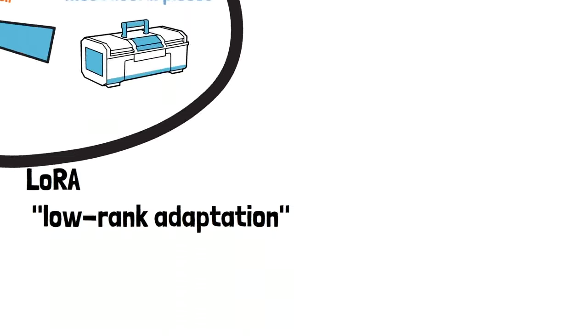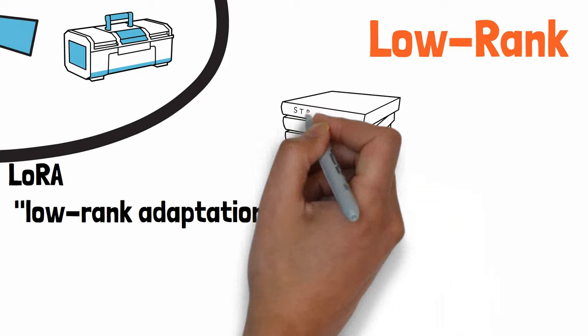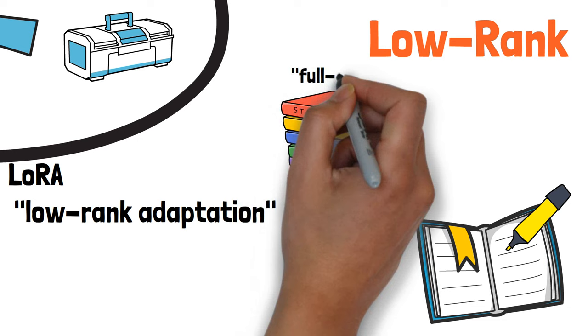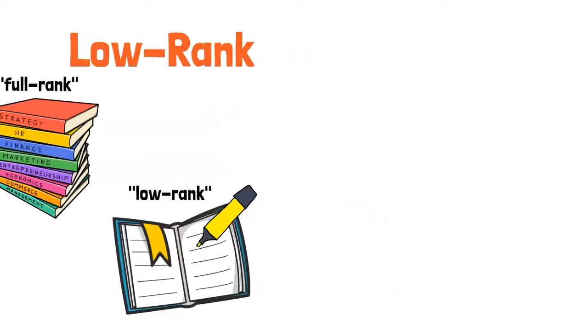LoRa stands for low-rank adaptation. Low-rank in this context refers to a mathematical technique used to create this smaller, lighter model. You can also think of low-rank as just reading the highlighted parts of a book. Full-rank would be reading the entire book, low-rank would be reading just the important highlighted bits.